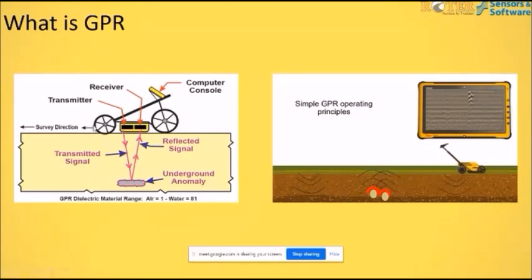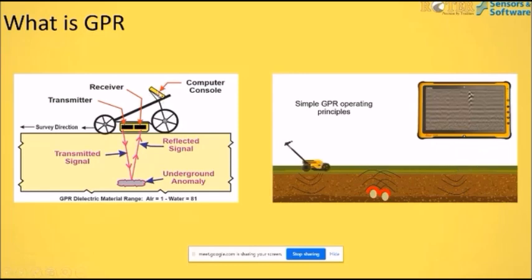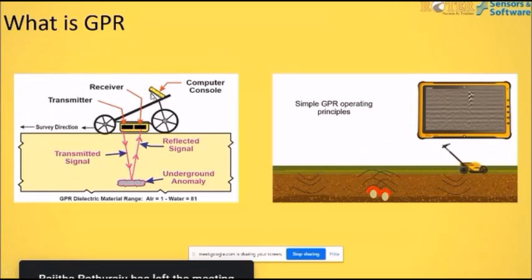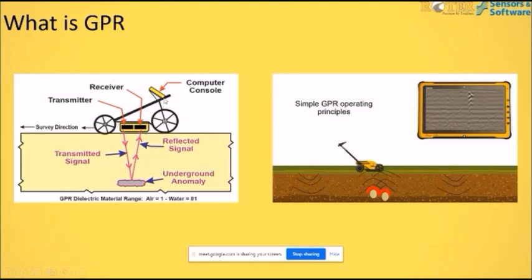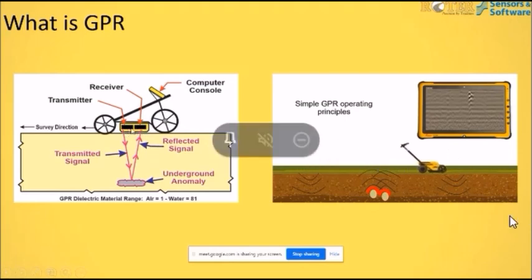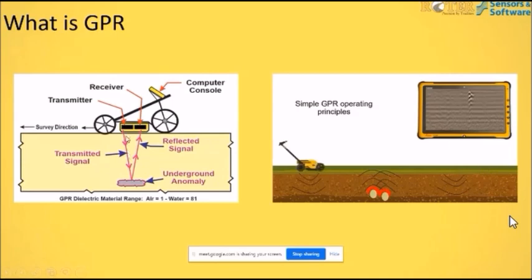Usually only one thing is common across all configurations: the architecture of a GPR. A computer console is always present to give commands, read outputs, and handle all operations. You can modify all parameters at the time of acquisition according to your needs. This console is connected with a sensor, which consists of two different modules: the transmitter and the receiver.